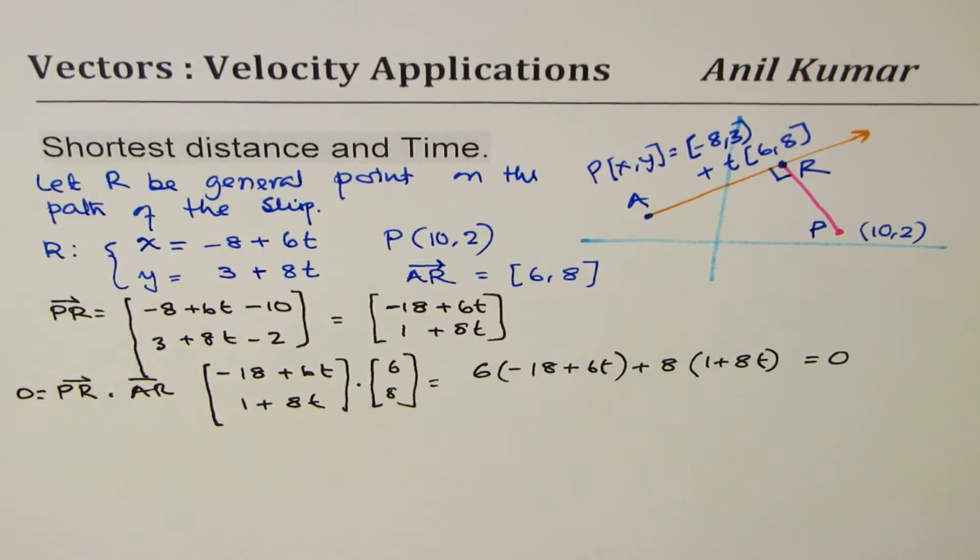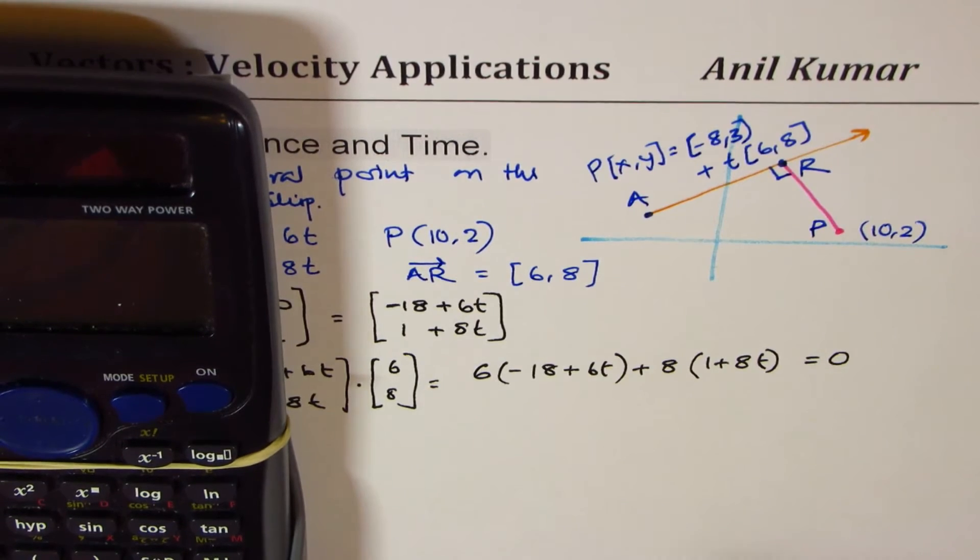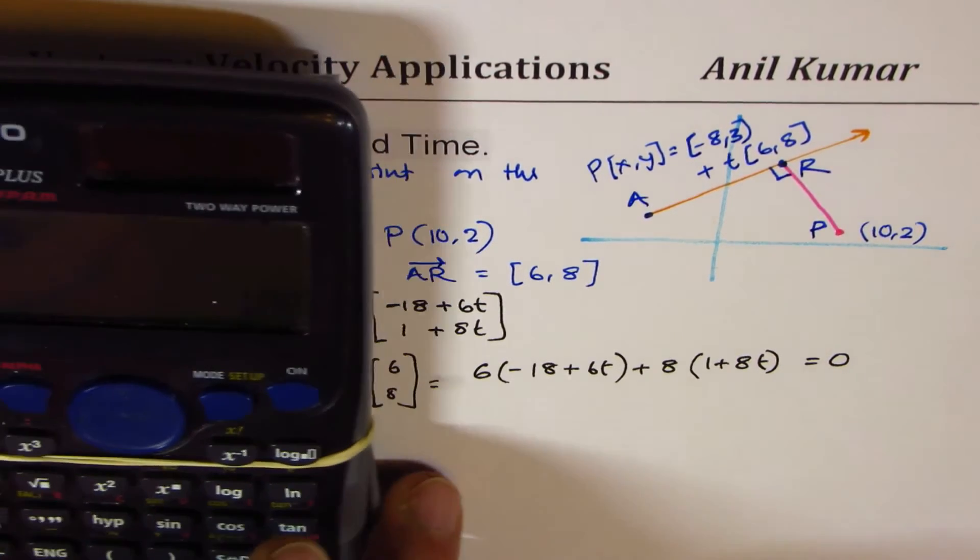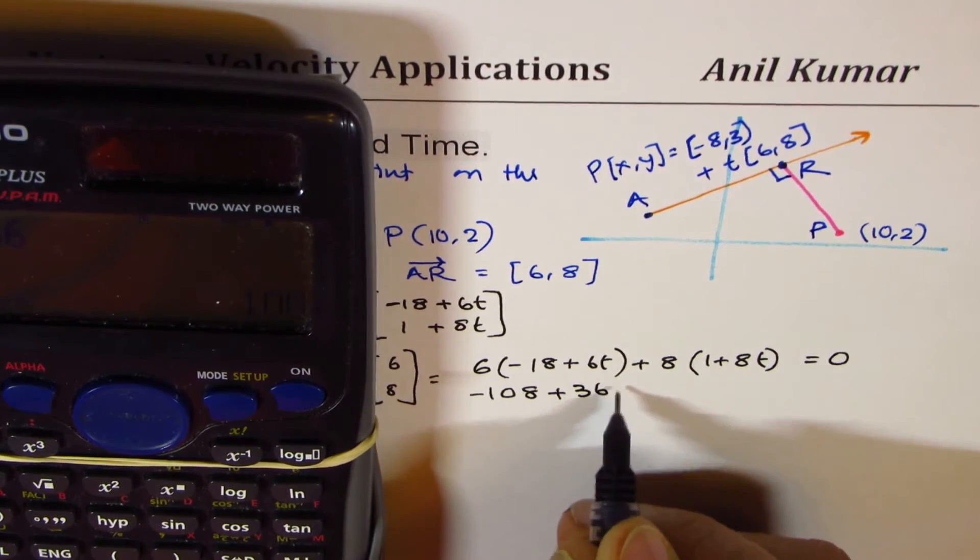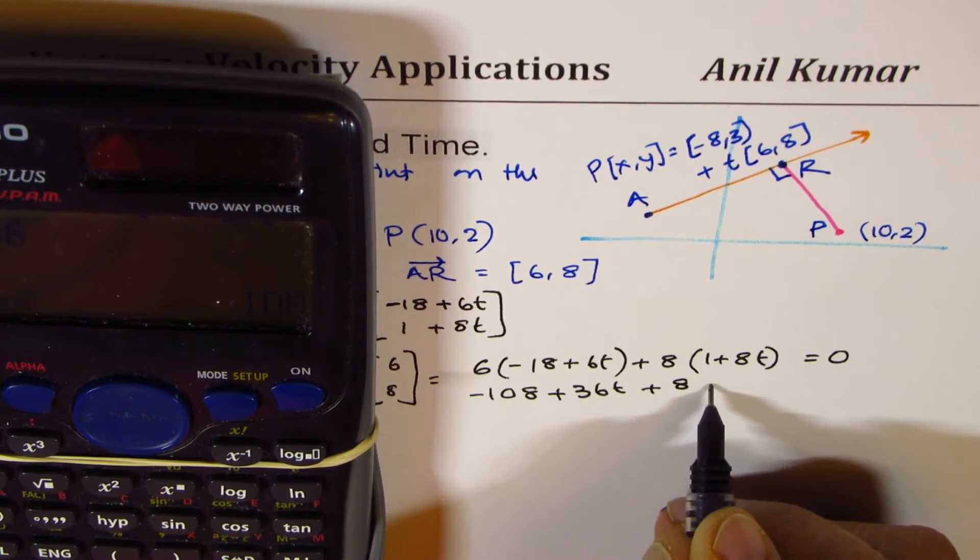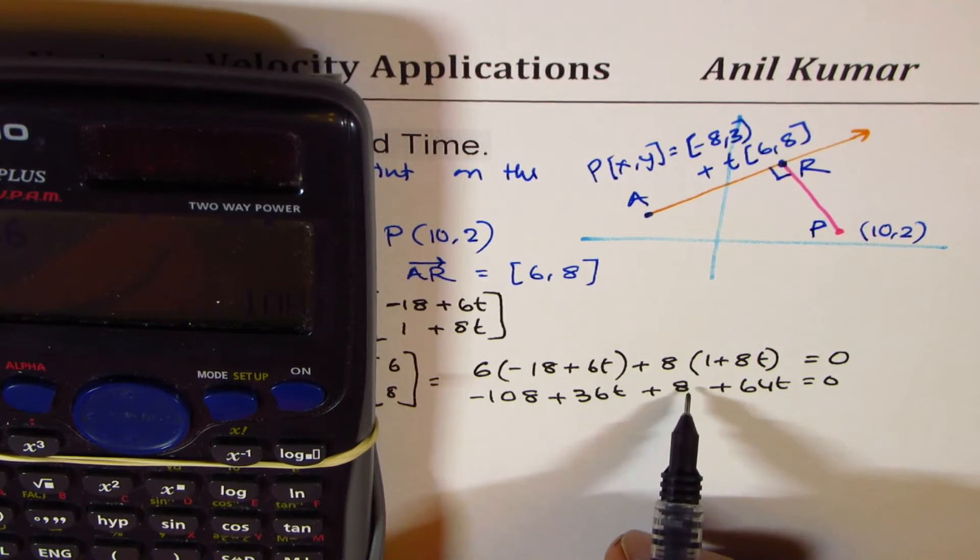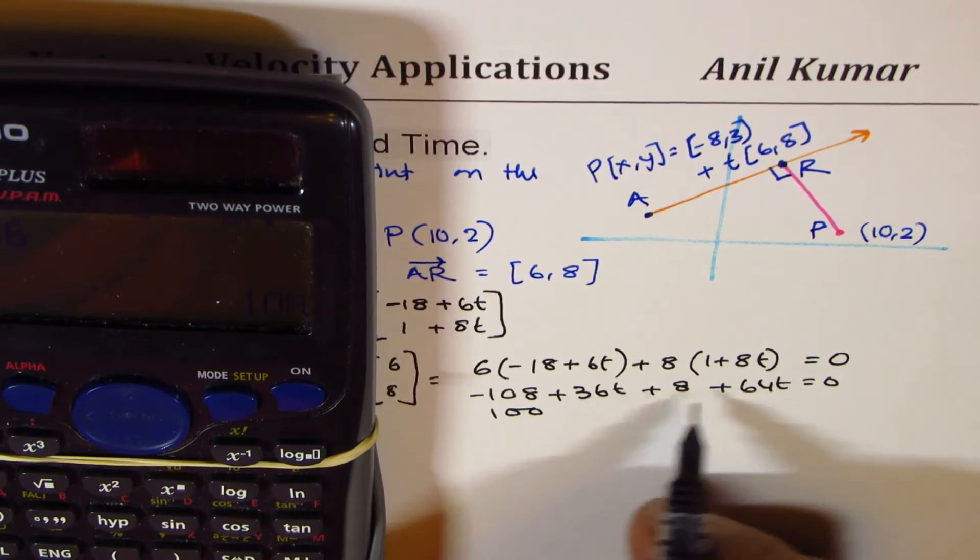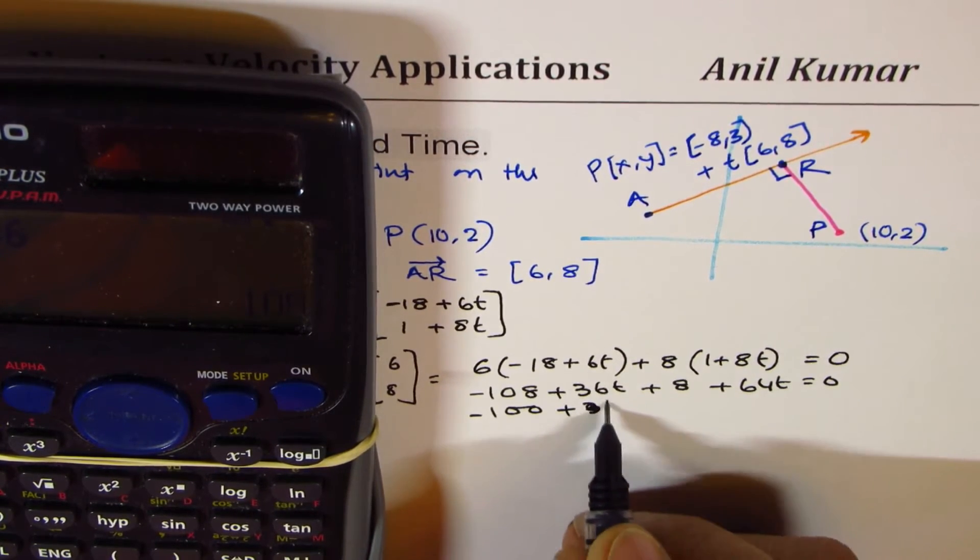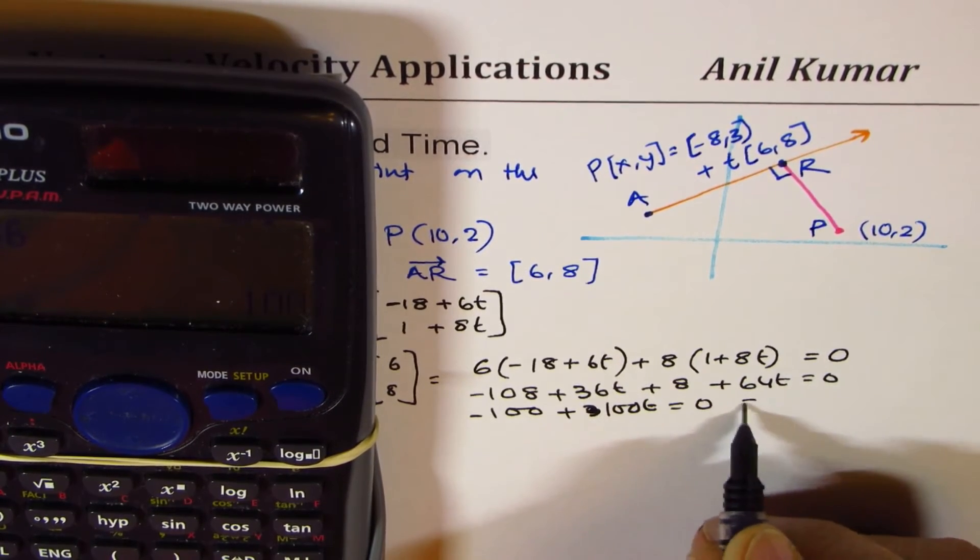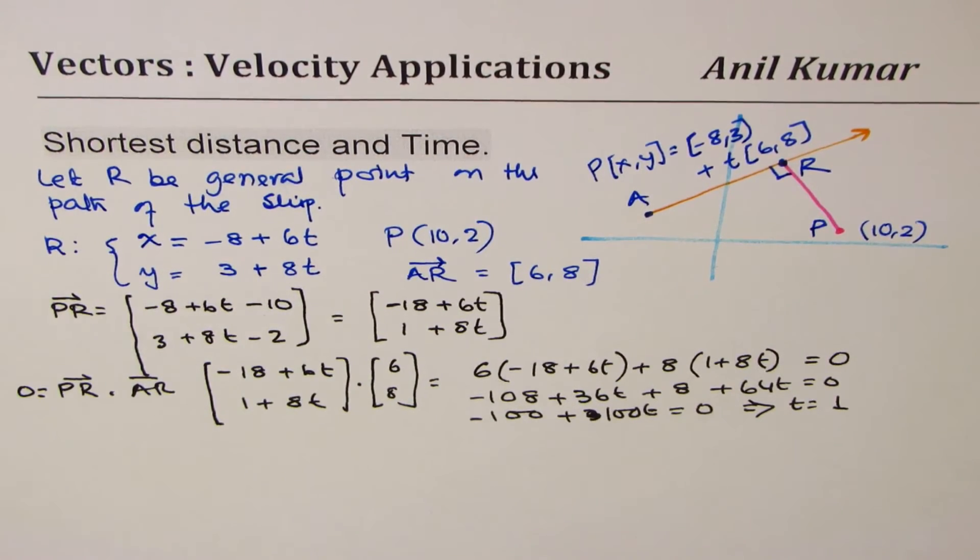So actually, I should have taken (3, 4). It becomes simpler calculations anyway. So let me do like this. 6 times (-18 + 6T) plus 8 times (1 + 8T) equals to 0. So we'll solve this equation. So let's take a calculator now. So 18 times 6, 108. So -108 + 36T plus 8 plus 64T equals to 0. Now, -108 and 8 is -100. So we get -100 and 36 plus 64T is also 100T. So this is -100. This is plus 100T equals to 0 and that gives us T equals to 1.